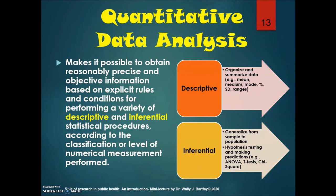Quantitative data analysis makes it possible to obtain reasonably precise and objective information based on explicit rules for performing a variety of descriptive and inferential statistical procedures, based on the level of numerical measurement performed. Descriptive statistics describe data sets and provide summary information — typical examples are mean, median, mode, percentages, standard deviation, and ranges. Inferential statistics attempt to generalize from a sample to a target population, involving hypothesis testing and predictions; examples include ANOVA, t-test, and chi-square.